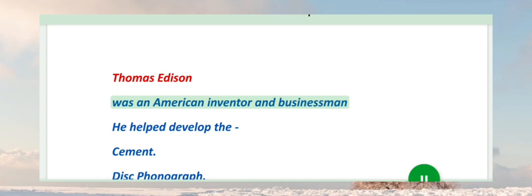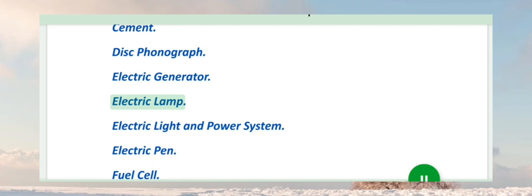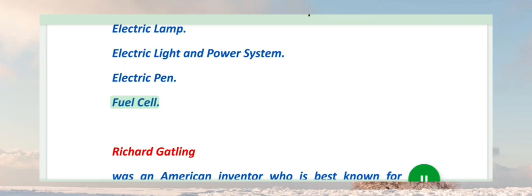Thomas Edison was an American inventor and businessman. He helped develop the cement, disc phonograph, electric generator, electric lamp, electric light and power system, electric pen, and fuse cell.